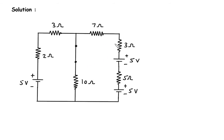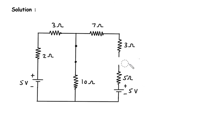Then again here we can see this 5 volt and this 5 volt are connected in series. So their total will be 10 volt. So we can remove one voltage source and this will be 10 volt.